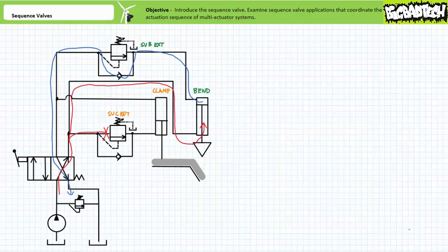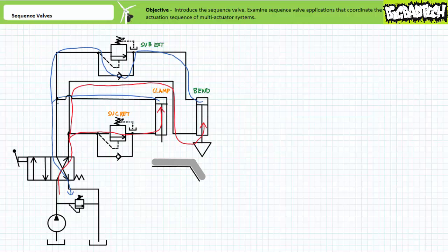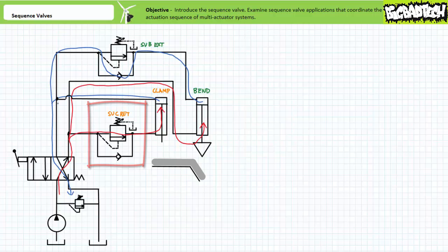When the directional control valve is shifted back to the cross connect position, the check valve bypass bypasses SVB extend and allows the bend cylinder to retract with no pressure precondition. However, the normally closed SVC retract initially prevents the retraction of the clamp cylinder. Only when the bend cylinder fully retracts does pressure rise to that of the set value of SVC retract. At this point, SVC retract maintains pressure in the primary circuit and opens, allowing the clamp cylinder to retract. Note how the pressure decision made by SVC retract coordinates the actuation sequence and SVB extend is bypassed. Long story short: retract the bend cylinder first, then retract the clamp cylinder.